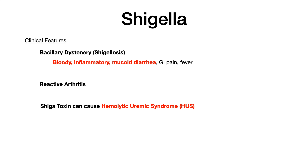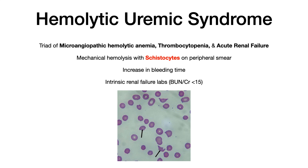Shigella can also cause reactive arthritis. And very importantly, Shigella can cause hemolytic uremic syndrome (HUS). On exams, HUS is usually caused by the O157:H7 subtype of E. coli, whose toxin is called Shiga-like toxin — aptly named because Shigella is the original source of that Shiga toxin. E. coli got the name Shiga-like because Shigella is where the toxin really originates.